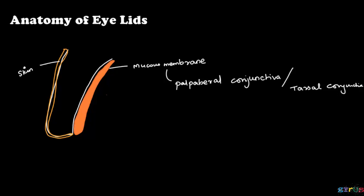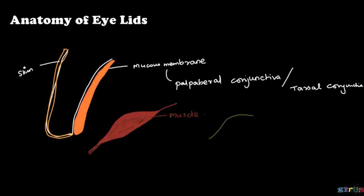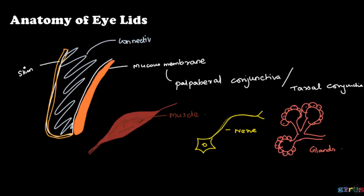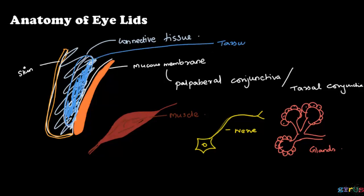The eyelid has muscles, nerve supply, and glands — various glands like these small endobines which we will be discussing about. All these three are embedded inside a connective tissue which holds them together. This connective tissue is denser in the posterior aspect and that is why we call it the tarsus, also known as the tarsal plate.